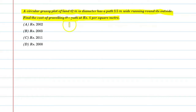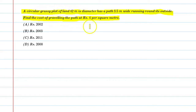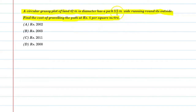The question means that there is a circular grassy plot. Its diameter is 42 meters, and on the outside there is a 3.5 meter wide running path. We need to find the cost of graveling that running path, which is 4 rupees per square meter. So let's start this question and figure it through.